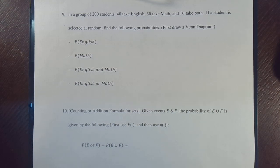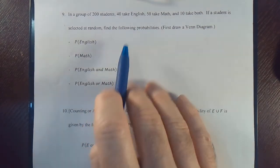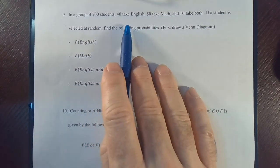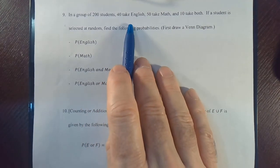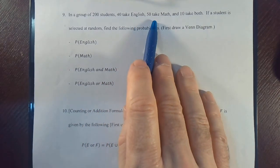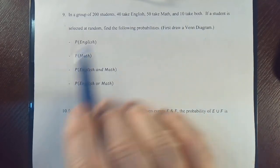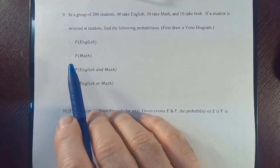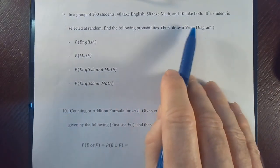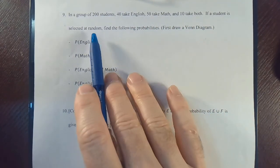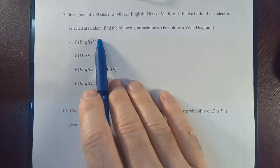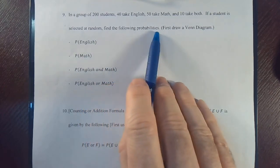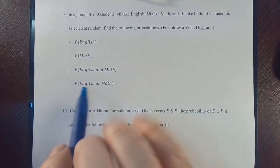In a group of 200 students, 40 of them are taking English, 50 of them take math, and 10 of them are taking both. If a student is selected at random, find the following probabilities.